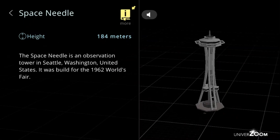Space Needle, height: 184 meters. The Space Needle is an observation tower in Seattle, Washington, United States. It was built for the 1962 World's Fair.